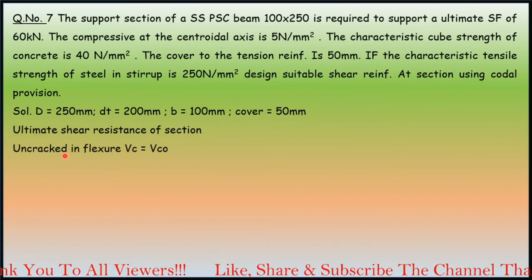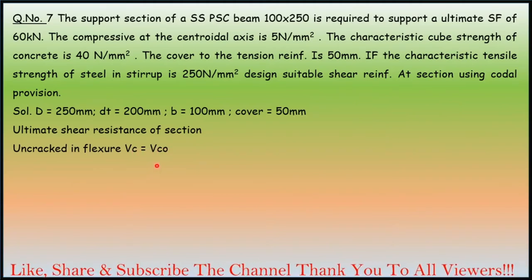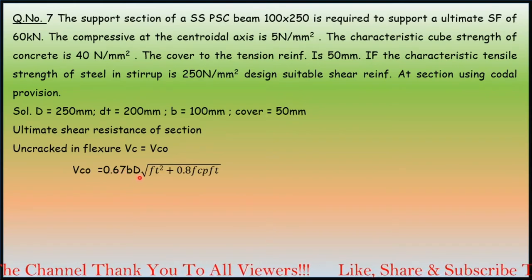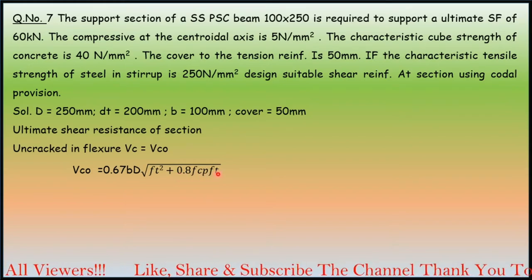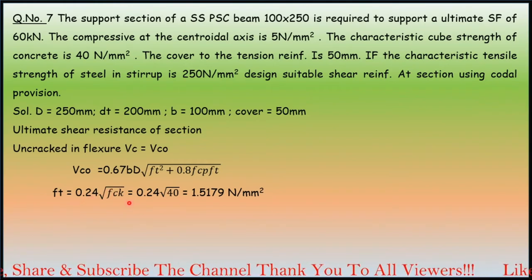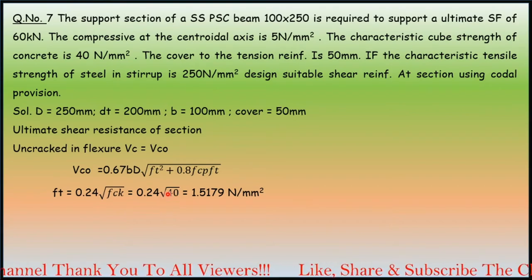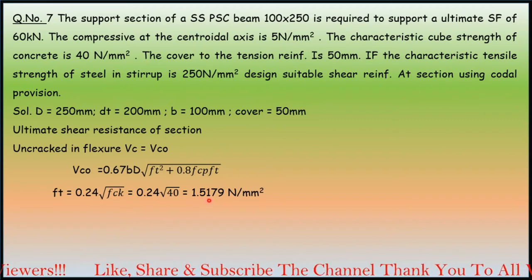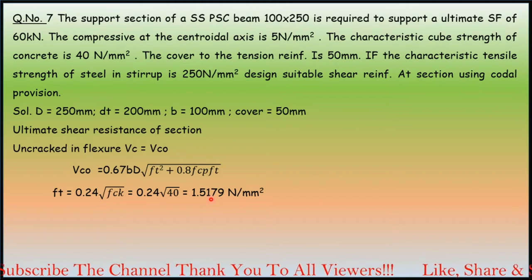Ultimate shear resistance of section uncracked in flexure: Vc equals Vco. We have to consider Vco as per the code: 0.67 BD√(ft² + 0.8 fcp ft). ft is 0.24√fck. fck is given in the question as 40 N/mm². Substituting that into the formula, we get the value of ft as 1.5179, we can consider it as 1.58 N/mm².